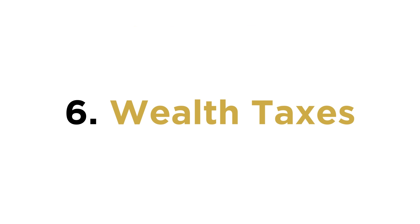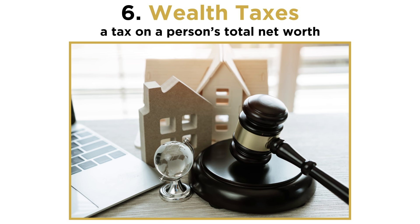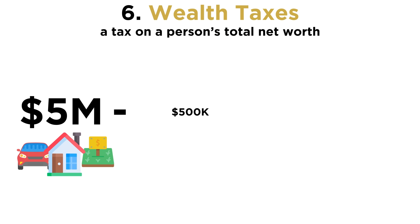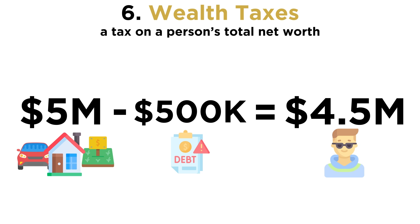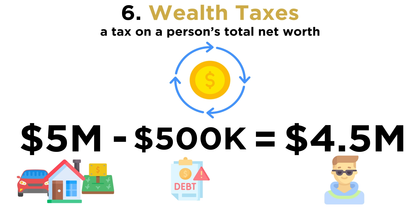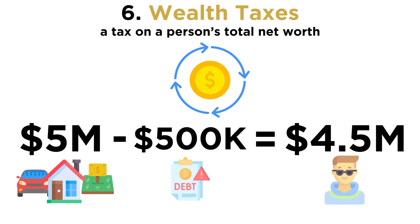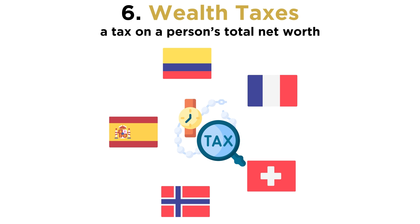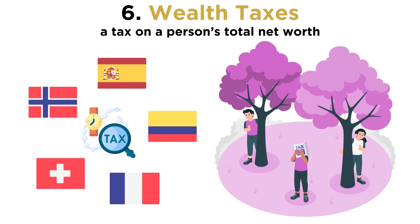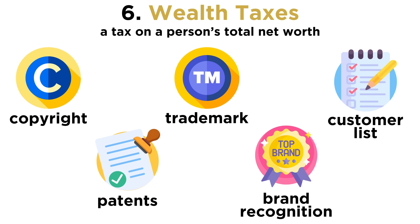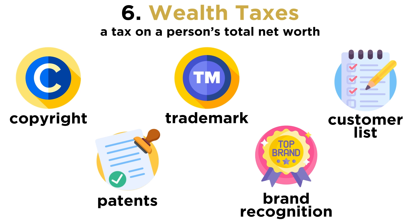Number six: wealth taxes. A wealth tax is a tax on a person's total net worth. To figure out a person's net worth, we look at the value of their assets minus their debt. For example, if a person has five million dollars in assets and five hundred thousand dollars in debt, their net worth would be four point five million dollars. Similar to property taxes, a wealth tax is recurring. Wealth taxes are not common around the world, primarily because most countries that have tried it have had a difficult time raising money from them, since people have either hidden their assets or taken their assets to other countries. Additionally, some assets are difficult to evaluate, particularly intangible ones. Therefore, most governments prefer taxes on earned wealth in a given year rather than accumulated wealth.